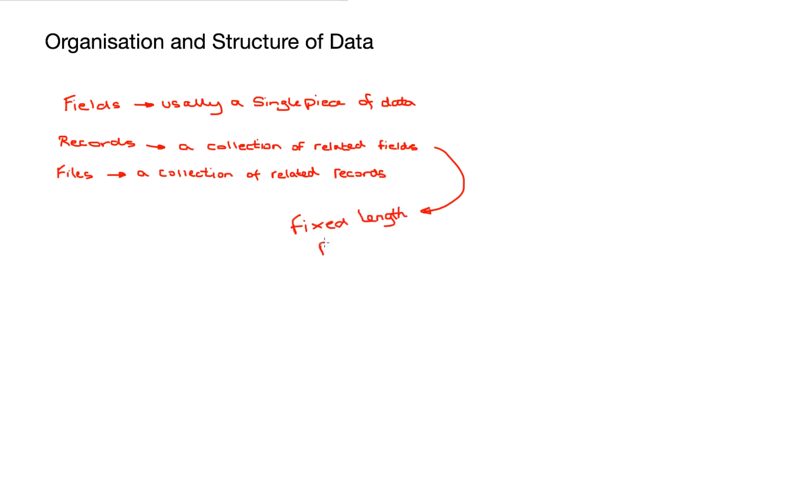One thing to point out about records is that they can be either fixed or variable length. A fixed length record means that every record in our file is exactly the same size, and this has its own advantage.